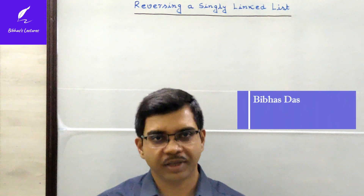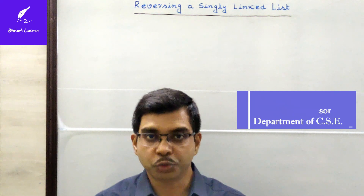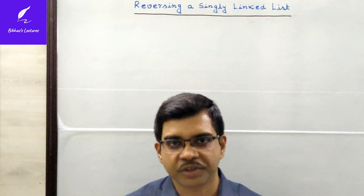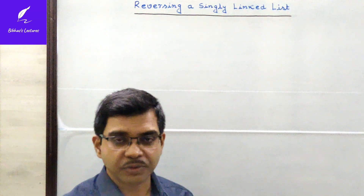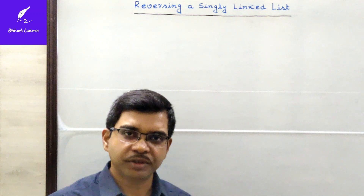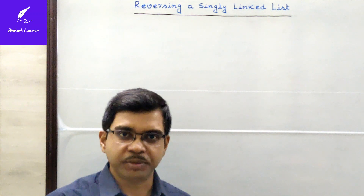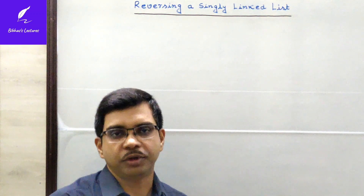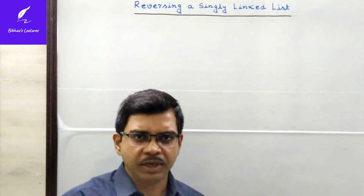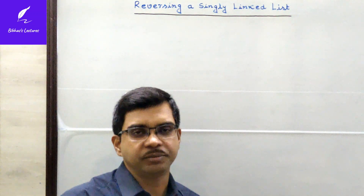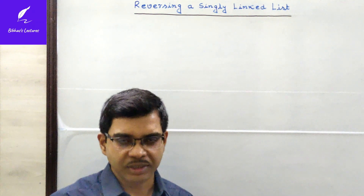Hello, dear students and learners. In the series of data structures and algorithms, today I am going to discuss how to reverse a singly linked list. Reversing means we are going to reverse the entire list — the first node will become the last node, the last node will become the first node, and all intermediate nodes will change their positions accordingly.